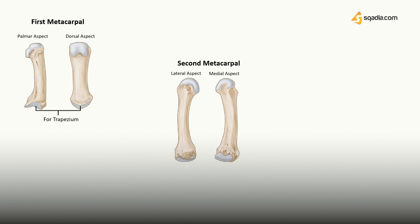The salient feature of the second metacarpal is that it has the largest base among all with the longest shaft. The base has several areas for articulation with the carpal bones. There is a groove in the coronal plane through which it articulates with the trapezoid bone. Medial to this groove is a ridge for articulation with the capitate bone, and laterally there is a quadrangular surface for the joint with the trapezium bone. The second metacarpal also articulates with the third metacarpal at the base.